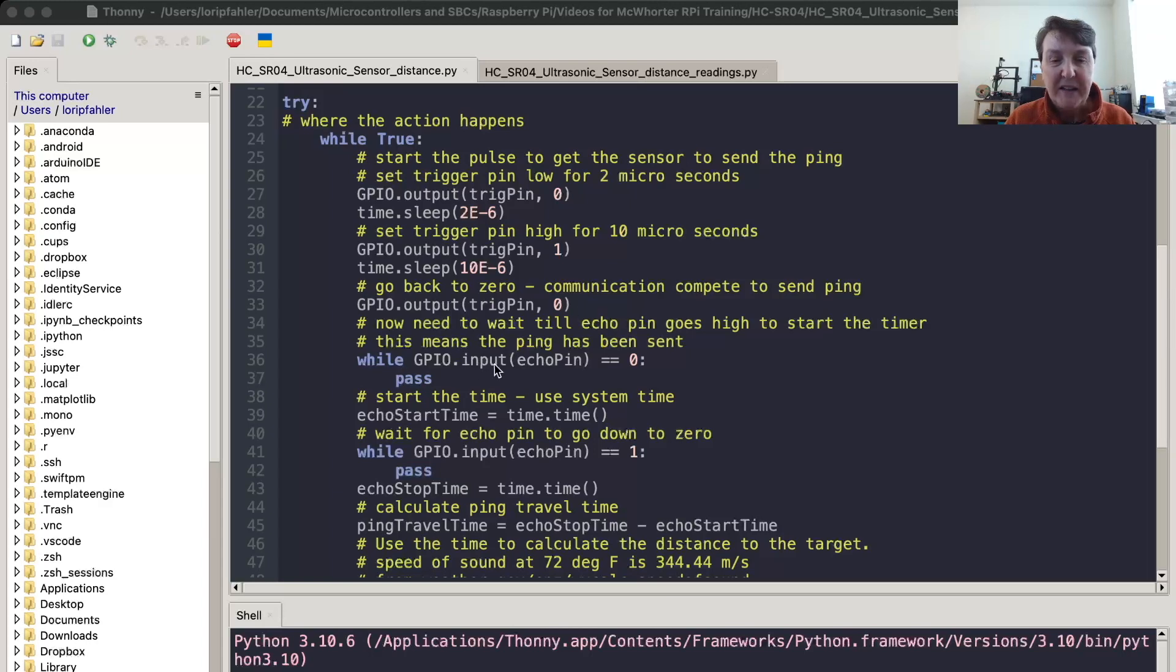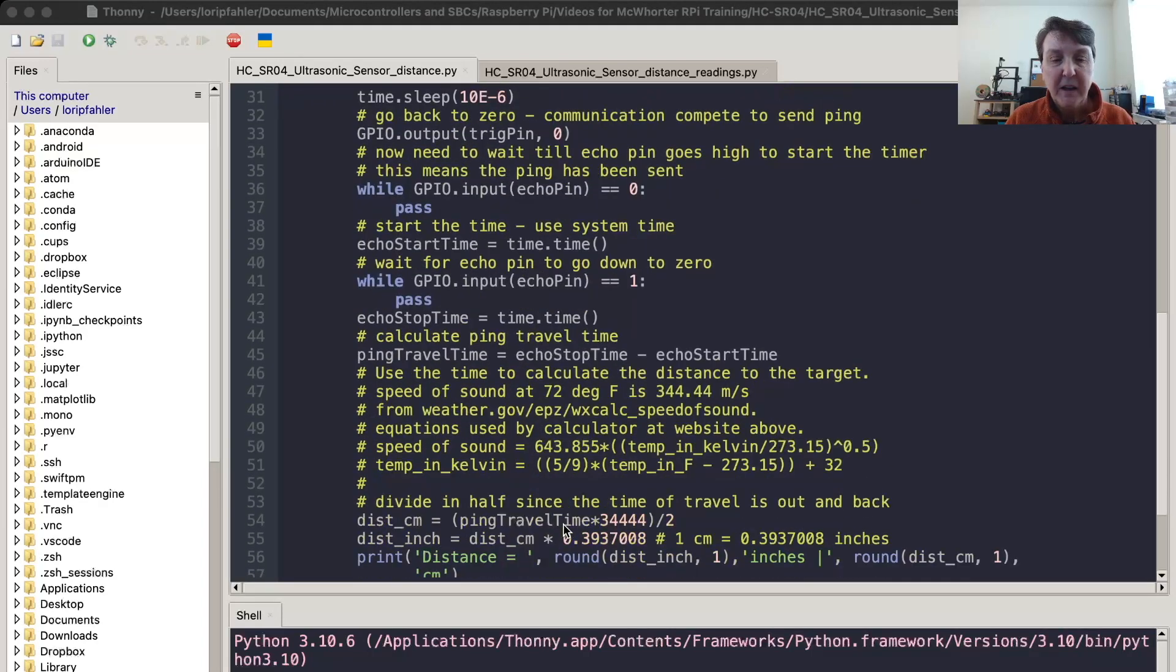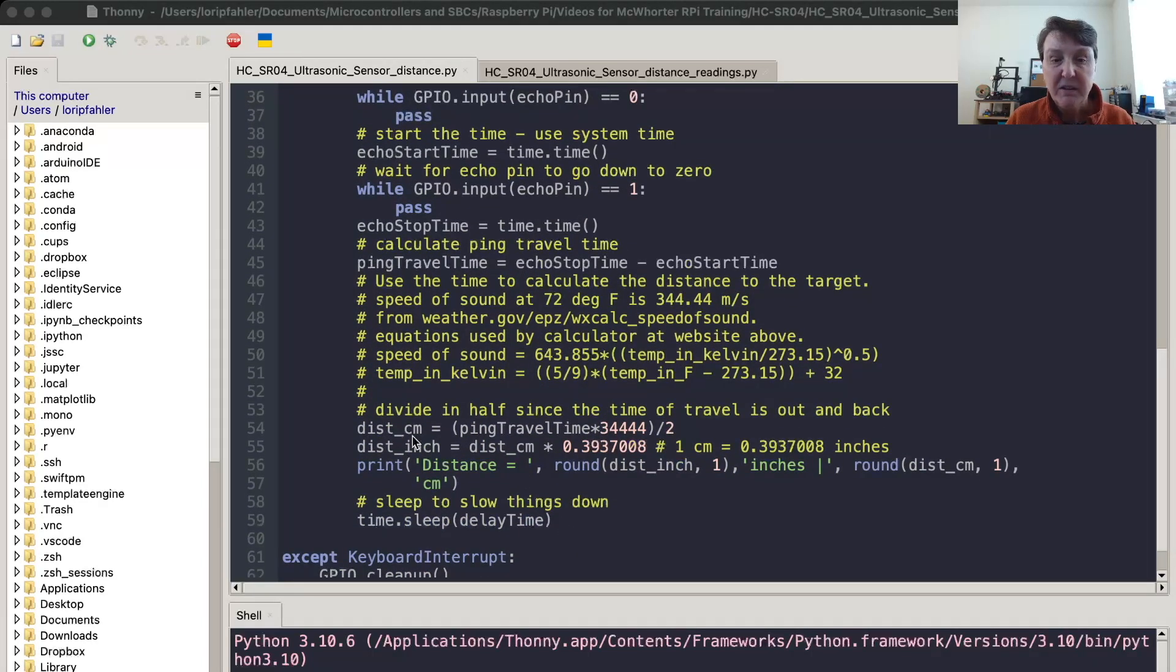Now we'll wait until the echo pin goes high. This while pass code will wait until it goes high. Then we'll catch that time when that happens. Then we'll wait again with another while and pass until the echo pin goes low. That means the sound has been received back and we'll record that time as well. Then the travel time will be the difference between those two times. We'll use that in our calculation for the distance in centimeters times our speed of sound and divide by 2.